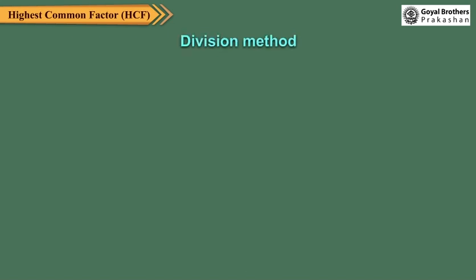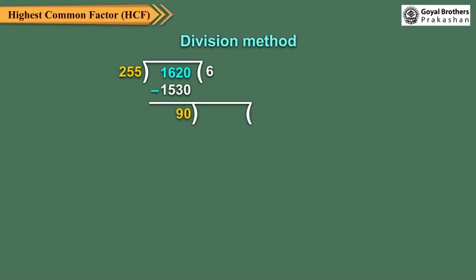Now let us find the HCF of 255 and 1620 using the division method. Take the greater number as the dividend and the smaller number as the divisor. Find the quotient and the remainder. Take remainder 90 as the new divisor and 255 as the new dividend, then find the quotient and remainder. Now take remainder 75 as the new divisor and 90 as the new dividend, and find the quotient and remainder.